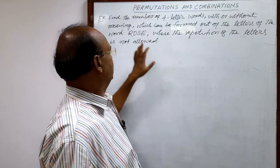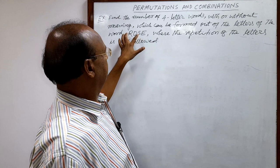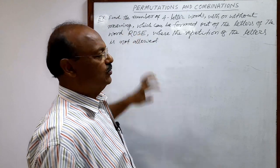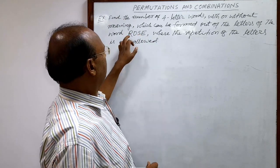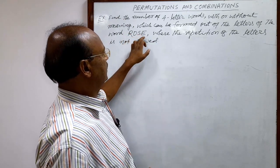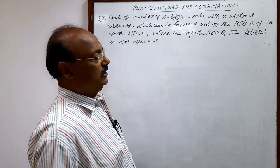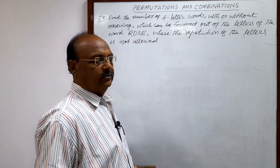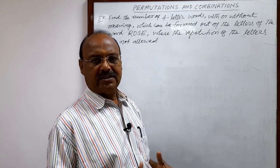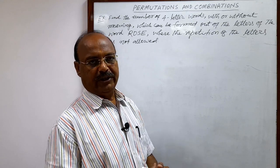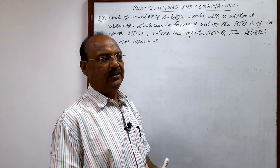The word given is ROSE, and in this word we have four letters: R, O, S, E. We have to use these four letters for forming different types of words, with or without meaning. So how many such words can be formed?